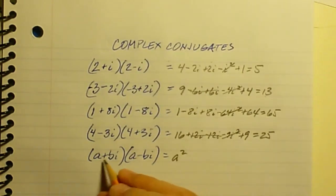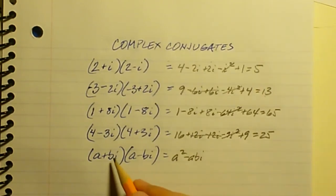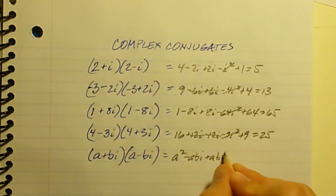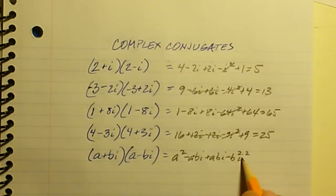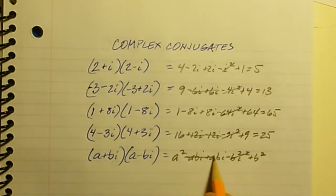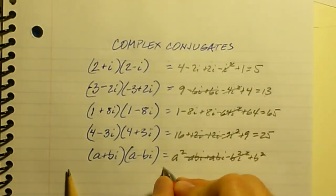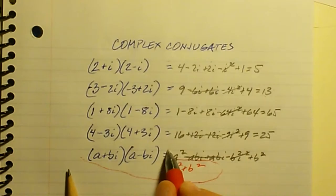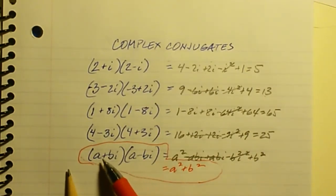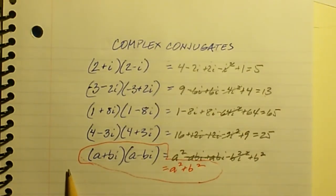Now let's look at the general case. a plus bi times a minus bi: a times a is a squared, the middle terms a times negative bi and bi times a cancel out, and bi times negative bi is minus b squared i squared. Since i squared is negative 1, that becomes plus b squared. So we end up with a squared plus b squared. That's a nice formula: a complex number times its conjugate equals a squared plus b squared, a real number.